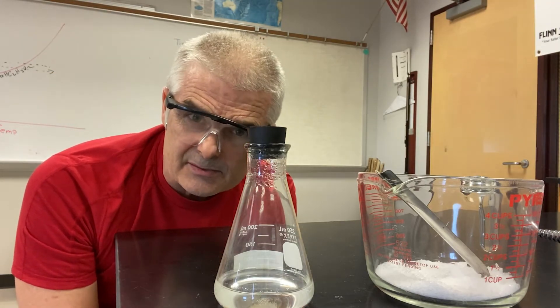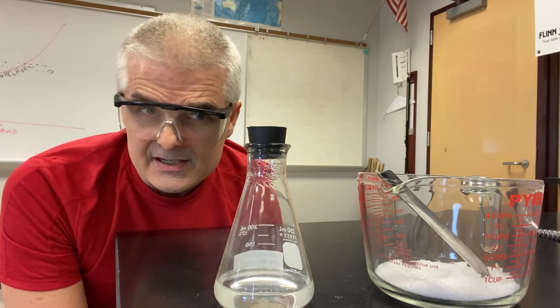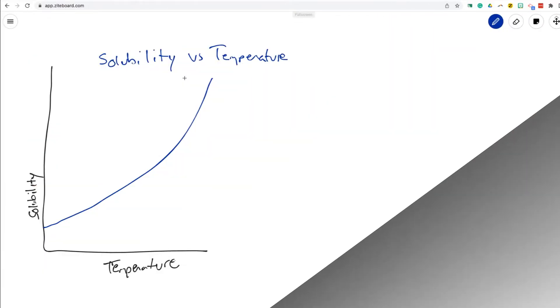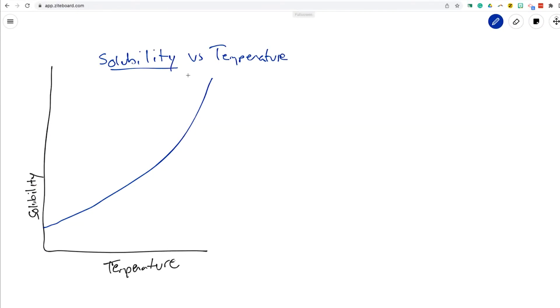Because supersaturated is a weird concept. It's the idea that you have more than the maximum amount of solute in a given amount of solvent. How does that work? So when we talk about something called the solubility, we oftentimes look at a graph of solubility versus temperature.